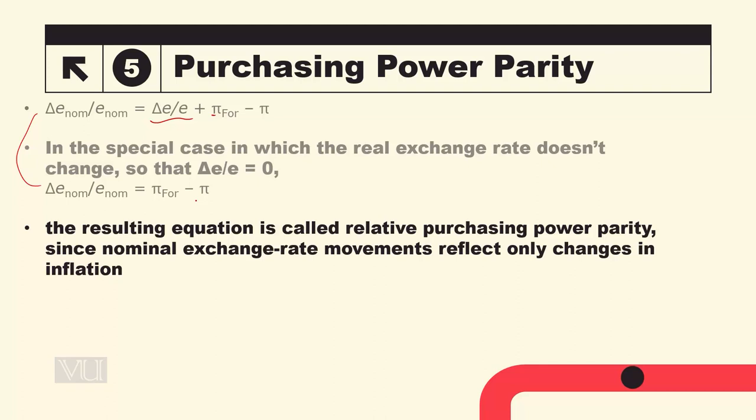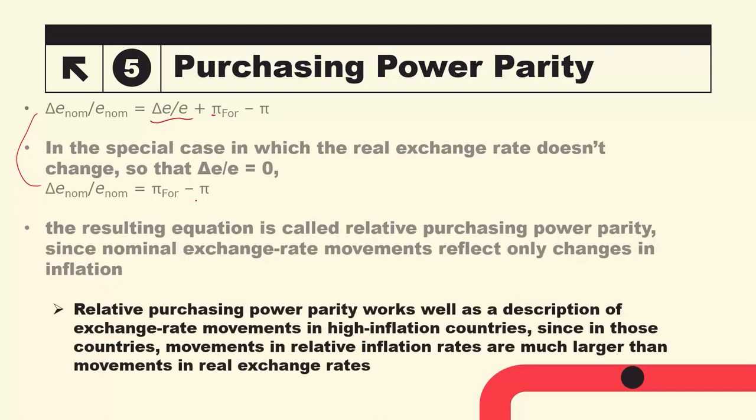Relative purchasing power parity works well as a description of exchange rate movement in high inflation countries, since in those countries movements in relative inflation rates are much larger than movements in real exchange rate۔ جن ملکوں میں inflation بہت high ہوتا ہے، وہاں یہ relative PPP نسبتاً بہتر صورتحال reflect کرتی ہے کیونکہ real exchange rate میں تبدیلی بہت کم آتی ہے as compared to inflation rates میں تبدیلی۔